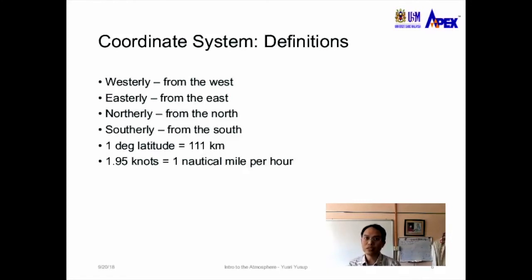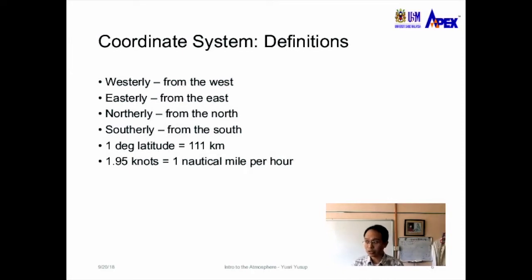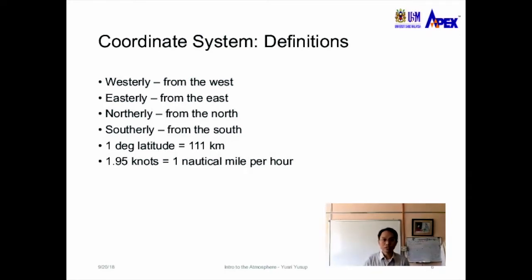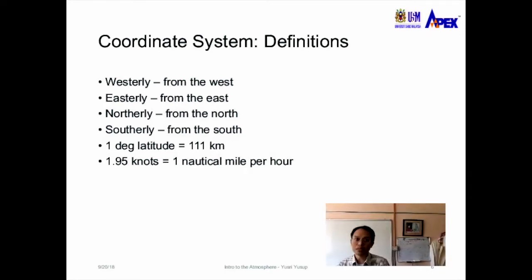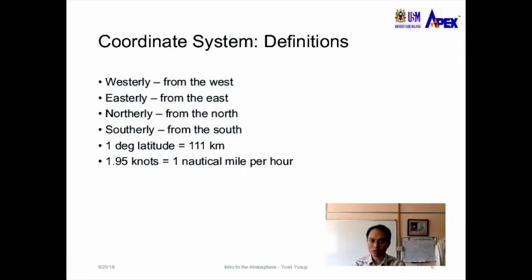Moving to definitions in the coordinate system: there are the terms westerly, easterly, northerly, and southerly. These refer to the direction from which wind comes. A westerly wind means winds coming from the west; easterly means from the east; northerly means from the north; and southerly means from the south.